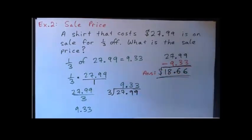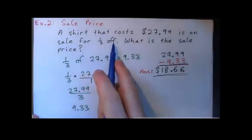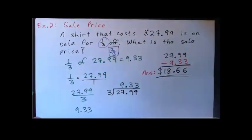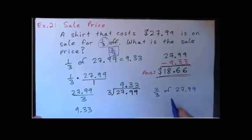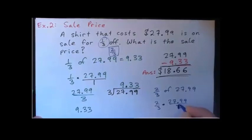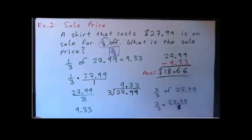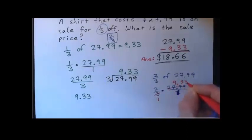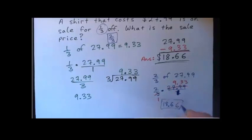There's another way of solving this problem. If it's on sale for one-third off, then you're going to have to pay two-thirds of the price. So what we could have done is two-thirds of twenty-seven ninety-nine: two over three multiplied by twenty-seven point ninety-nine over one. You multiply by two-thirds — three goes once into three, giving nine thirty-three, then two times three is six, two times three is six, two times nine is eighteen. So you end up with eighteen sixty-six that way.